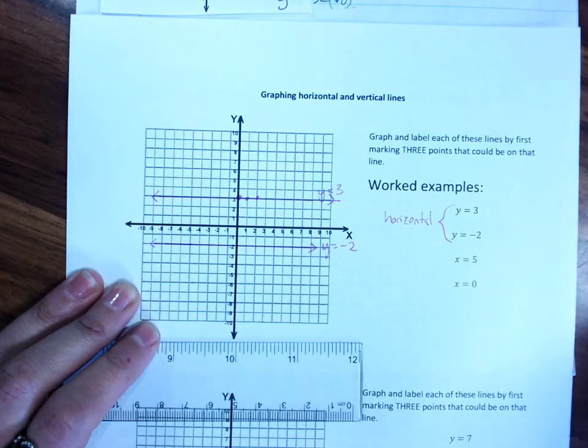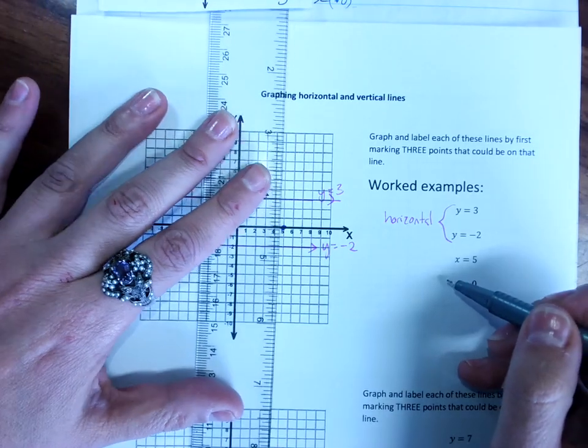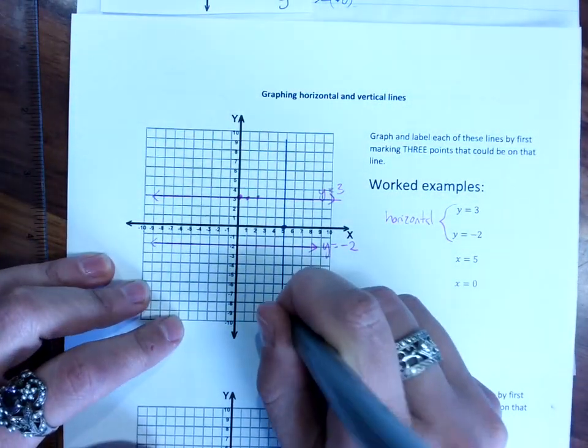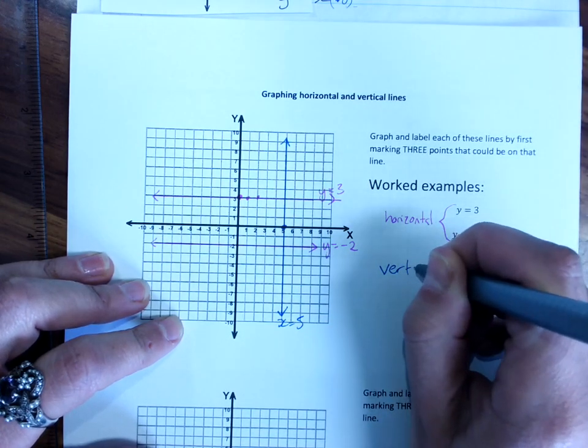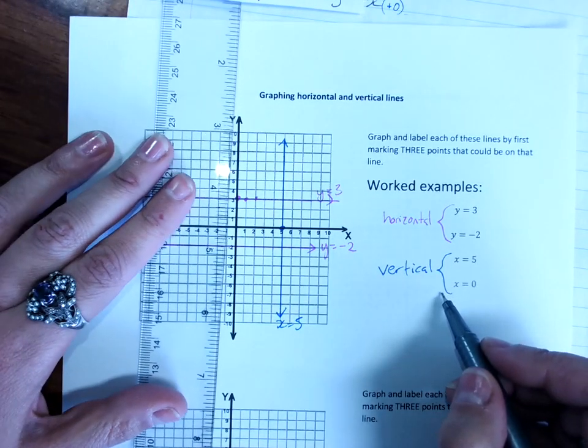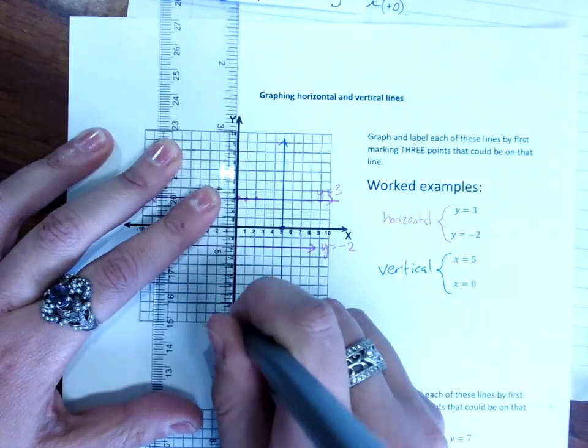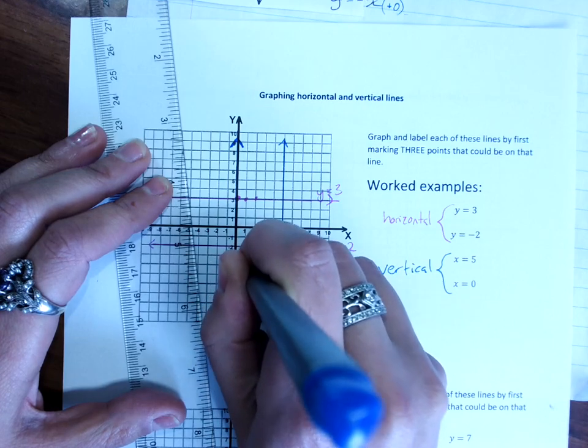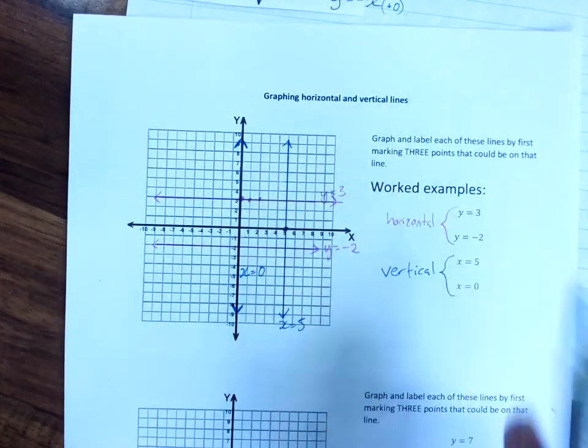And then of course, our x equals lines. Here's x equals 5. The only way you can make x always be 5 is to have a vertical line going straight down through x equals 5. So the x equals lines with no y are vertical. x equals 0, that's interesting. That's the line that is the y-axis. So the only way you can graph that is actually to sort of put a line, put the arrows, and then very clearly label it. Because it's very hard to actually draw x equals 0 and y equals 0.